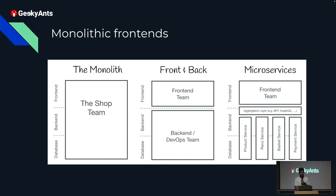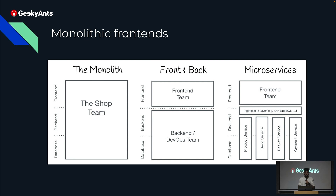Before getting into micro frontends, let's talk about the monolithic architecture. The usual architecture used to be a monolith where there is one repo and the frontend, backend, and data bus are all connected. All members of the team directly access the repo, which makes it difficult to maintain and make changes.